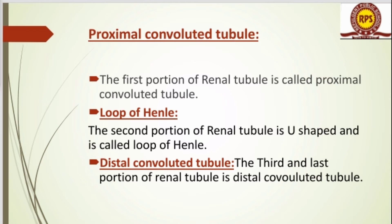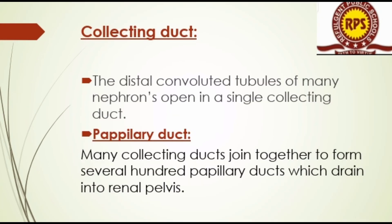The first portion of the renal tubule is called the proximal convoluted tubule. The second portion is the U-shaped loop of Henle. The third and last portion of the renal tubule is the distal convoluted tubule.